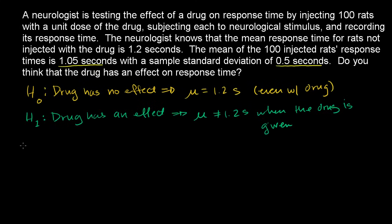Let's assume that the null hypothesis is true and figure out the probability that we would have actually gotten a sample mean of 1.05 seconds with a standard deviation of 0.5 seconds. What we're going to do is figure out the probability of getting something like this or even more extreme than this — how likely of an event is that? To think about that, let's consider the sampling distribution if we assume the null hypothesis.